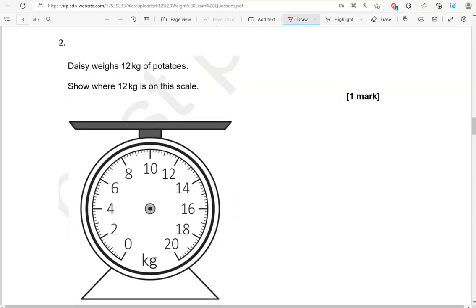Daisy weighs 12 kilograms of potatoes. Show where 12 kilograms is on the scale.